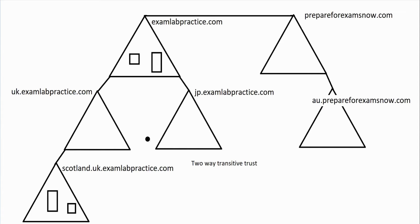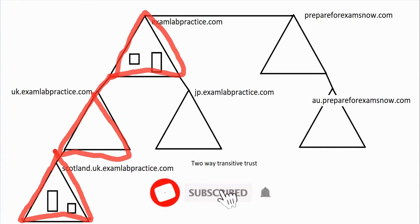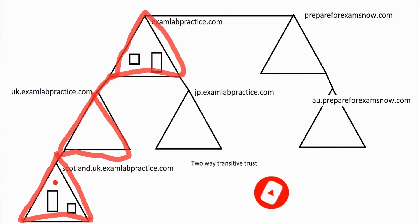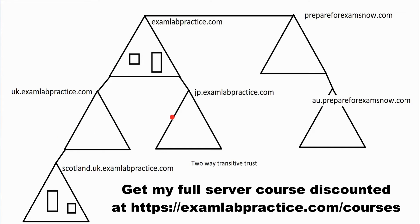It is also transitive — meaning it follows through. Because examlabpractice.com has a transitive trust with uk.examlabpractice.com, and uk.examlabpractice.com has a trust with Scotland, therefore examlabpractice.com and Scotland trust each other. In other words, if A trusts B and B trusts C, then A and C automatically trust each other. That happens automatically when you join domains to a forest.